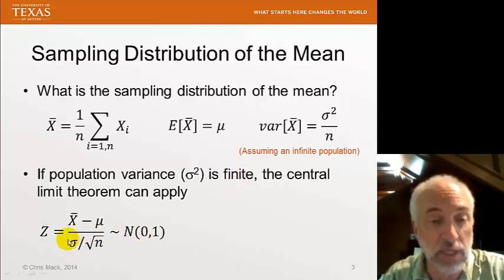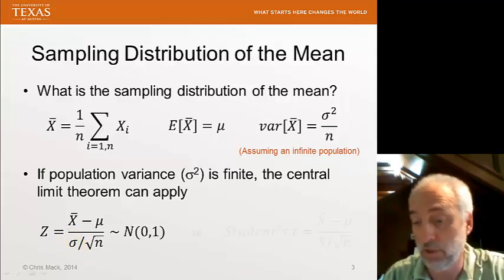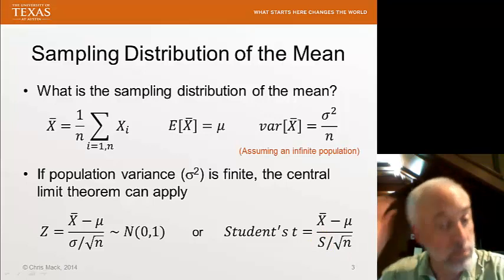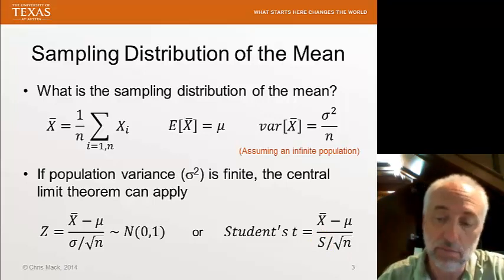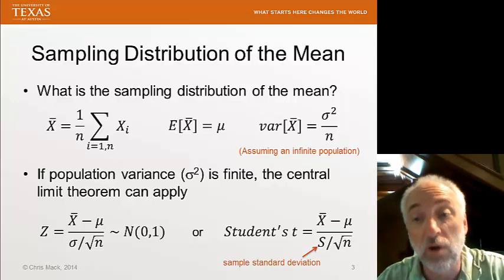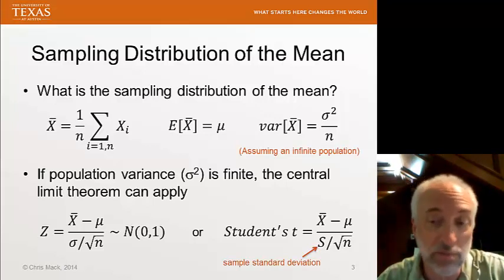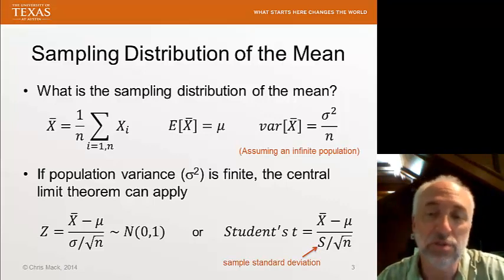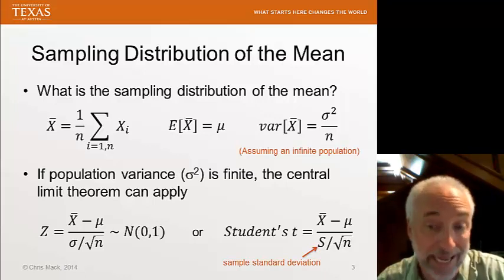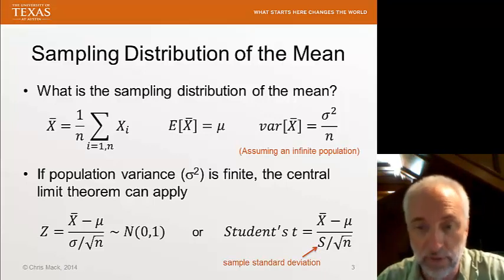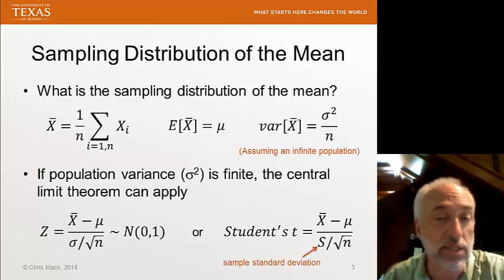It does assume we know the population standard deviation, though, which we generally don't. So, if we substitute the sample standard deviation in this equation, then instead of a normal distribution, we get a student's t distribution. The student's t distribution is a little bit different for small sample sizes. Once the sample size becomes 20 or 30, certainly by 30, we generally won't notice enough difference between a student's t distribution and a normal distribution to care. But if we have small samples, in particular 10 or less, then we really do have to worry about the student's t distribution and its difference from the normal distribution.